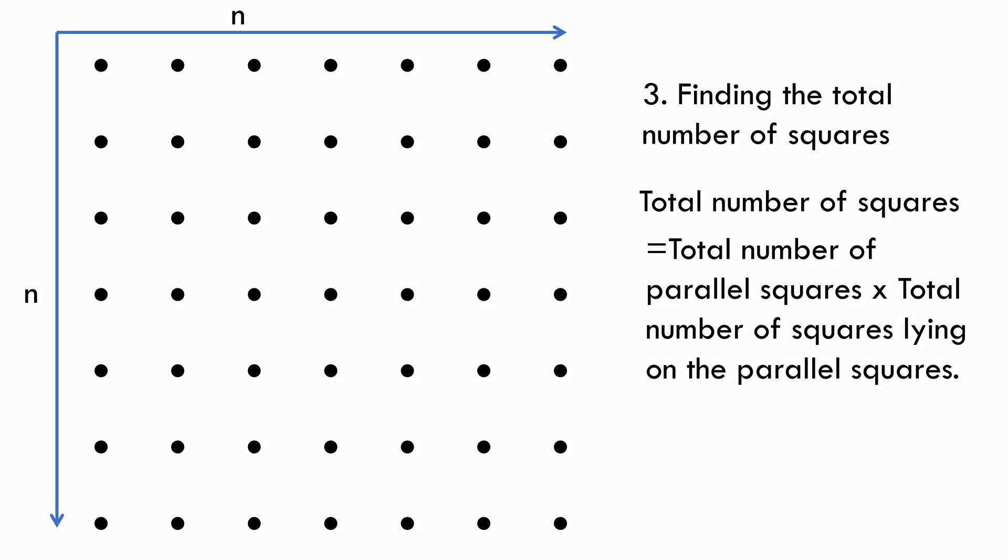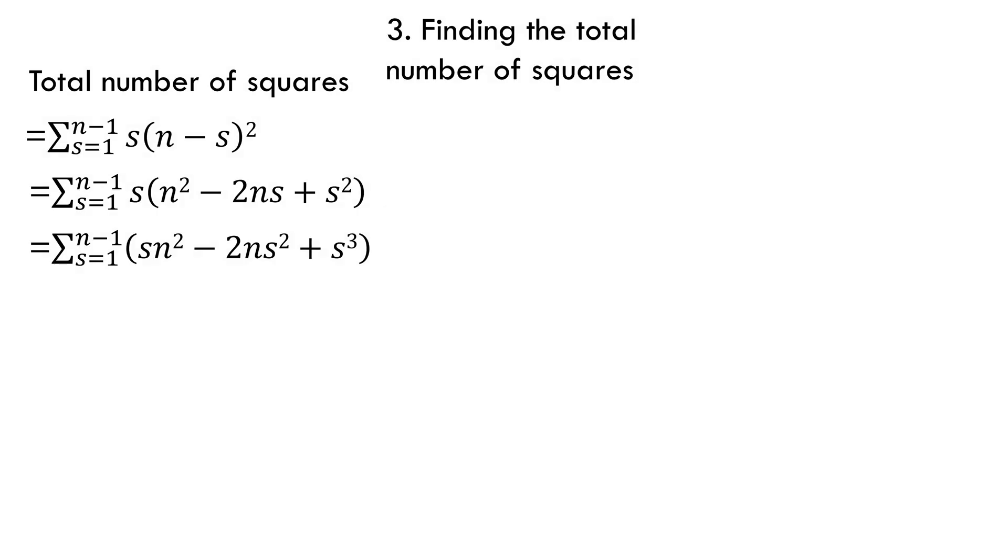So, moving forward, this will give us total number of squares in the figure equals to summation of (n minus s) whole square times s, where s equals 1 to n minus 1. We'll expand this to get the total number of squares equal to summation of s n square minus 2 n s square plus s cube. And this will get us total number of required squares equals to this.